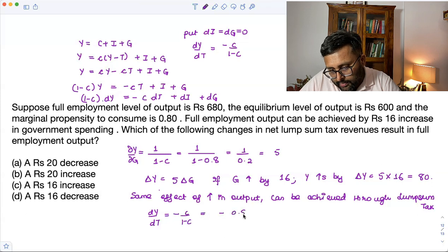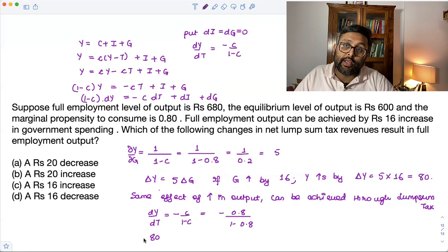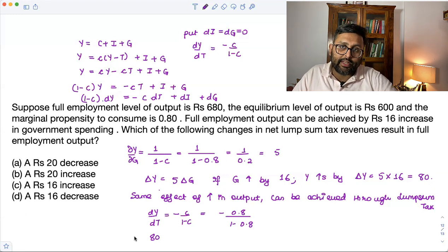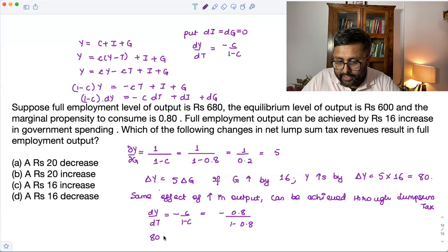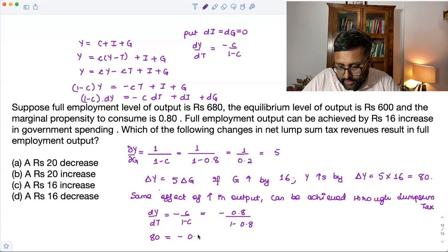What is C? 0.8, small c. It is like this. What is dY by dT? That is 80. Because you are saying that you can achieve the same effect of increase in output through the government expenditure or through the lump sum tax. So dY by dT is also there. So that is what the entire question. Right. So what you are saying is, increase in output is this. So what is this? 0.8 upon 1 minus 0.8 into delta T. So this is delta Y, right?